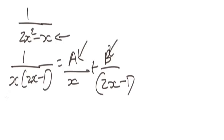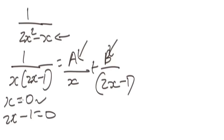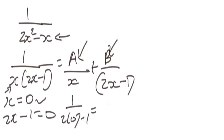Here's the shortcut trick. This factor x equates to zero and two x minus one equates to zero. For A, we set x equal to zero and substitute into the original expression — but not into the factor x itself. So we get one over two times zero minus one, which is one over negative one, which equals negative one. So A equals negative one.